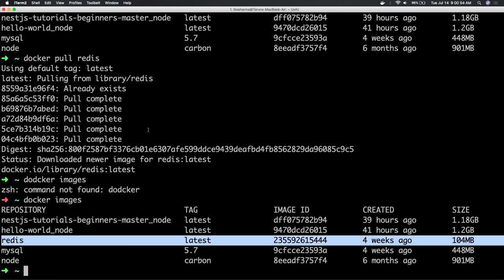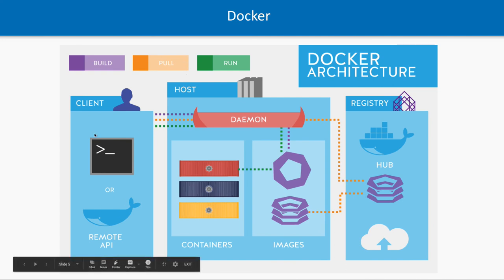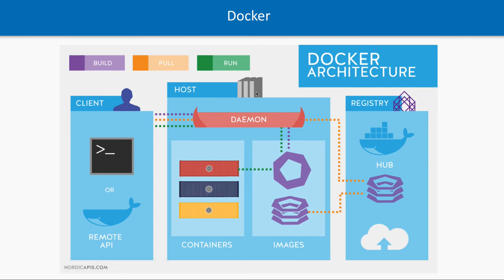Now we have the run command. What the run command does — from the command line you hit the command, it talks to the Docker daemon process of the host operating system, it looks for the image you already have, and it actually builds the container. So it is looking at the Docker image and creating the final container for you.